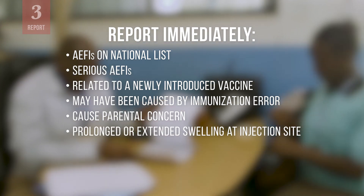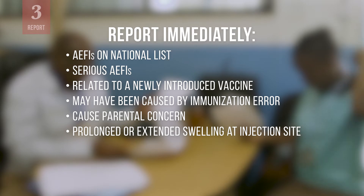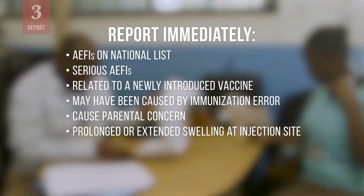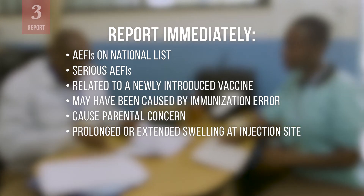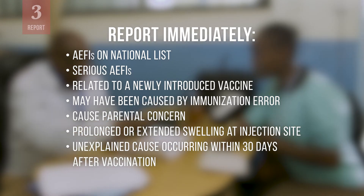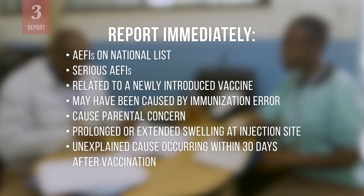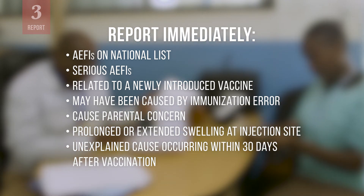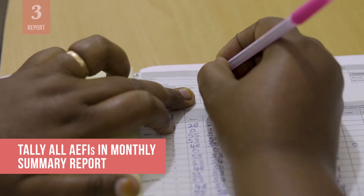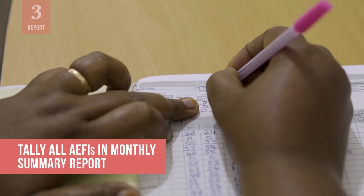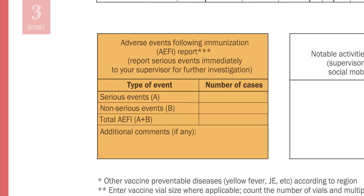You should also report any swelling, redness, or soreness at the injection site if it lasts for more than three days or swelling extends beyond the nearest joint. Report any significant events of unexplained cause occurring within 30 days after vaccination. At the end of the month, tally all AEFIs in your monthly summary report. This report includes a section for the total number of serious and non-serious events during the month. National authorities should provide guidance on which events should be included in each category.